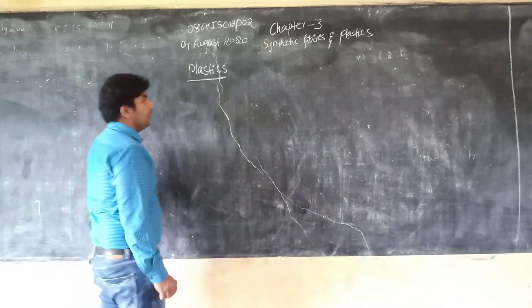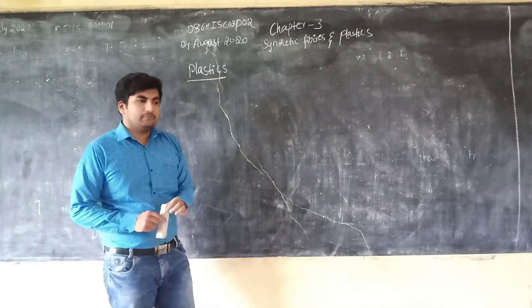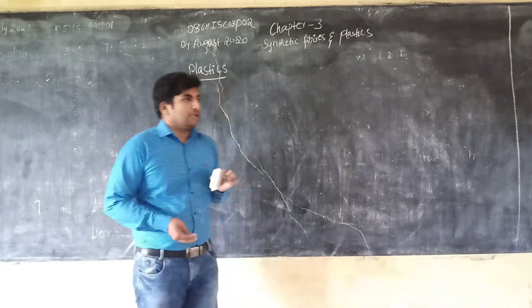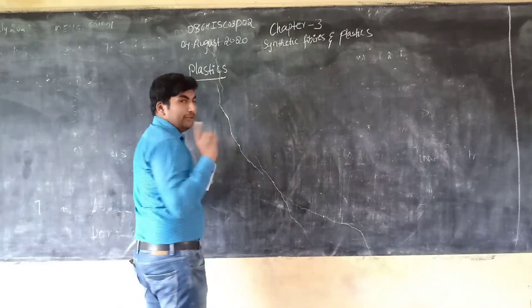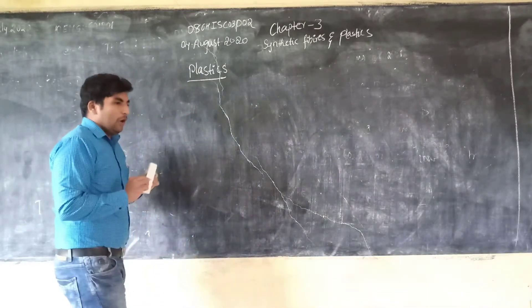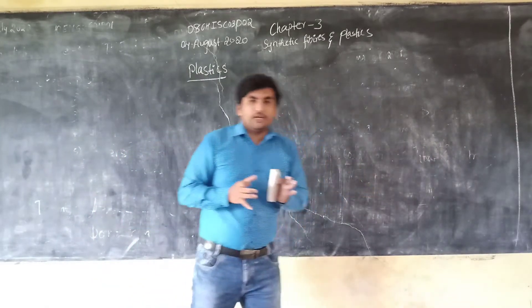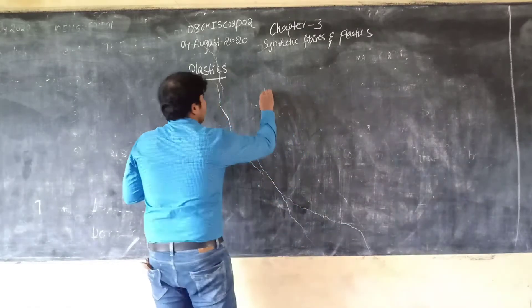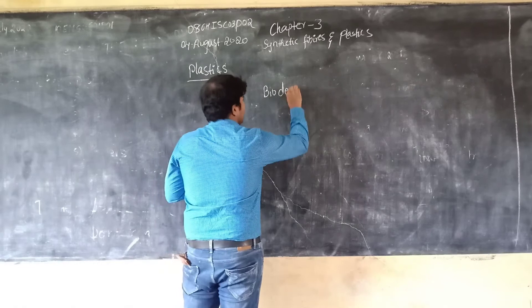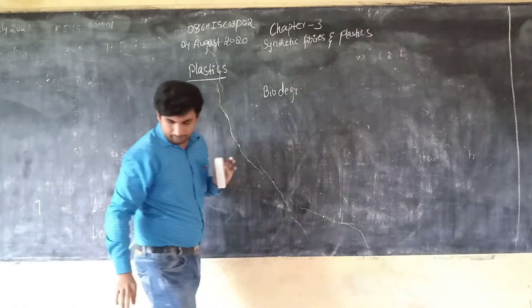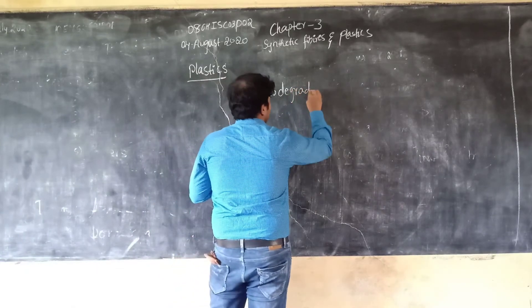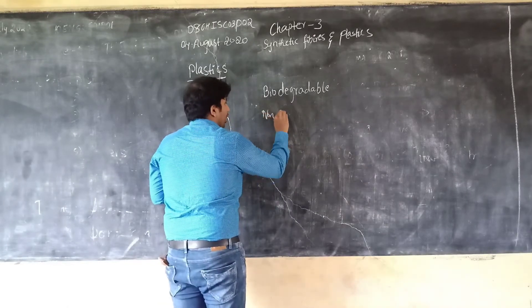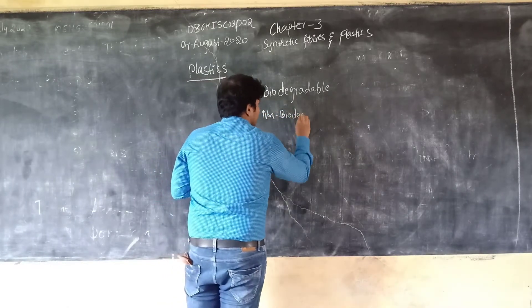Then we will move on to another topic. Plastics, however, are not environmentally friendly. Why? In nature, two types of materials exist. One is biodegradable material, and one more is non-biodegradable material.